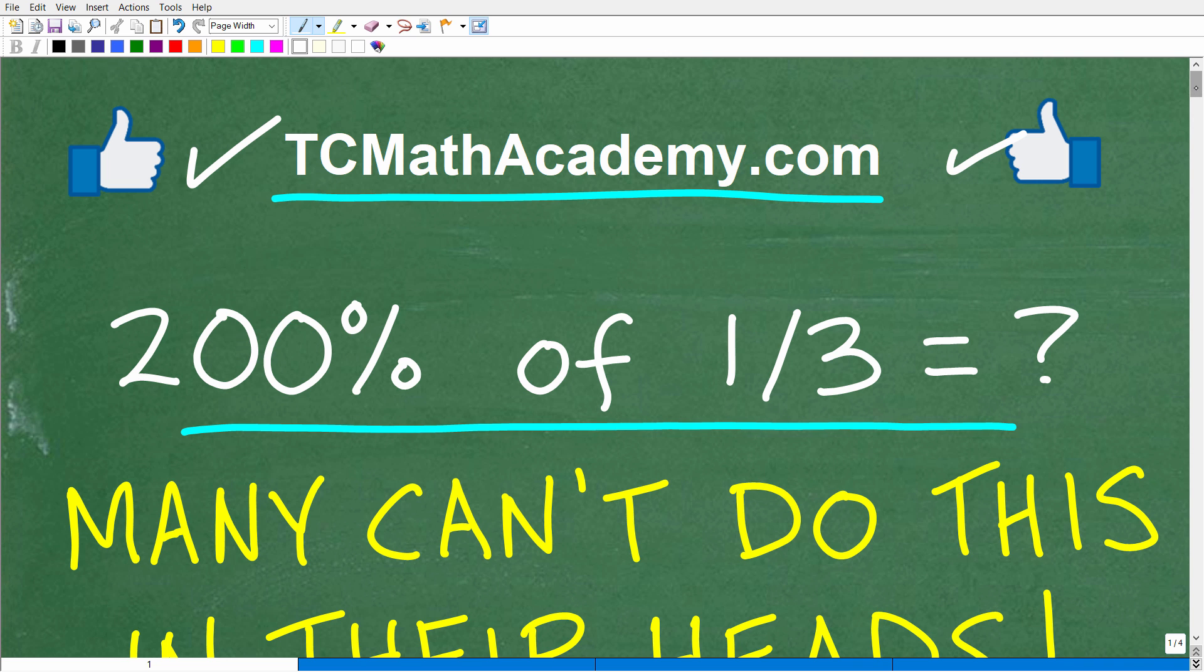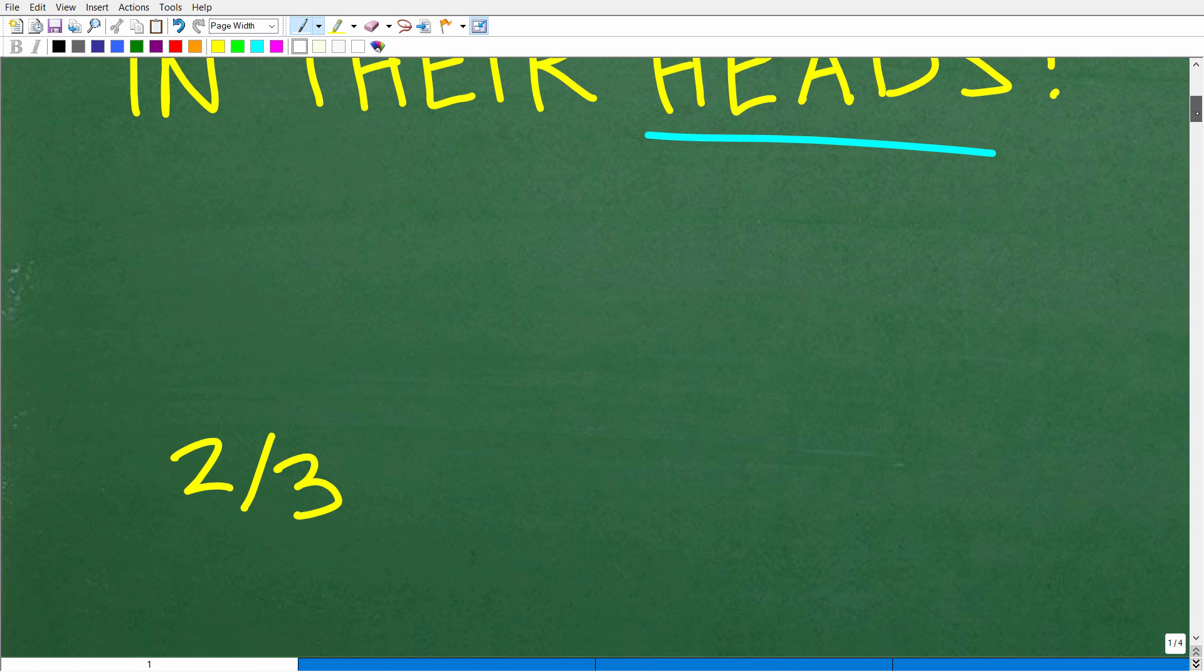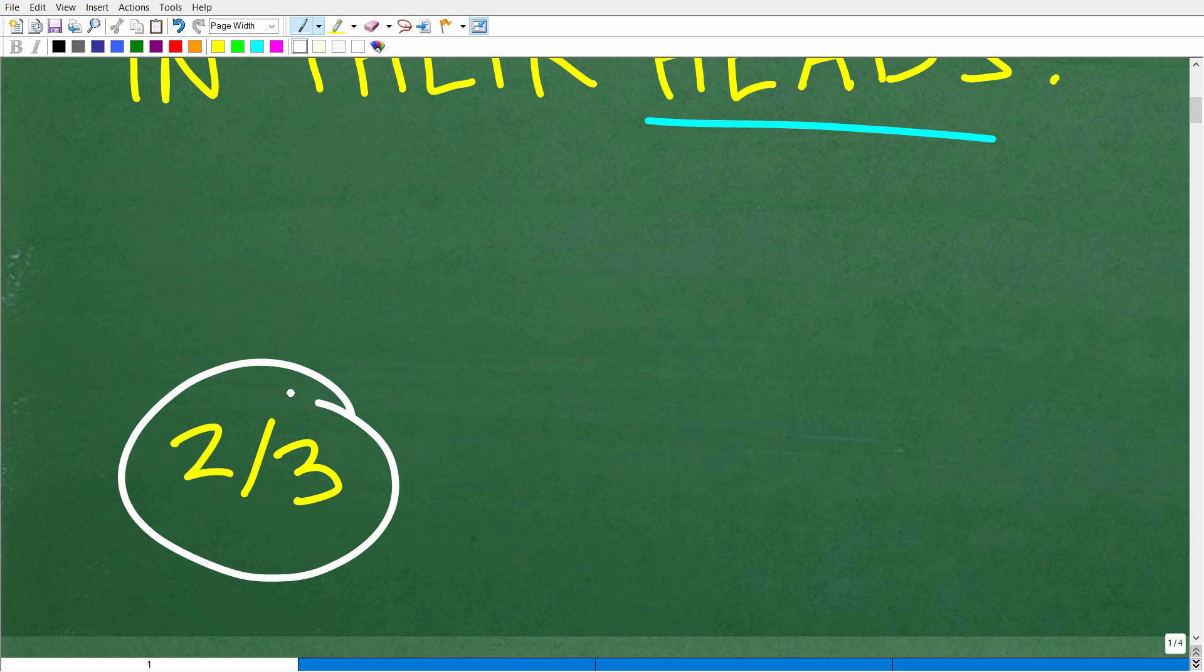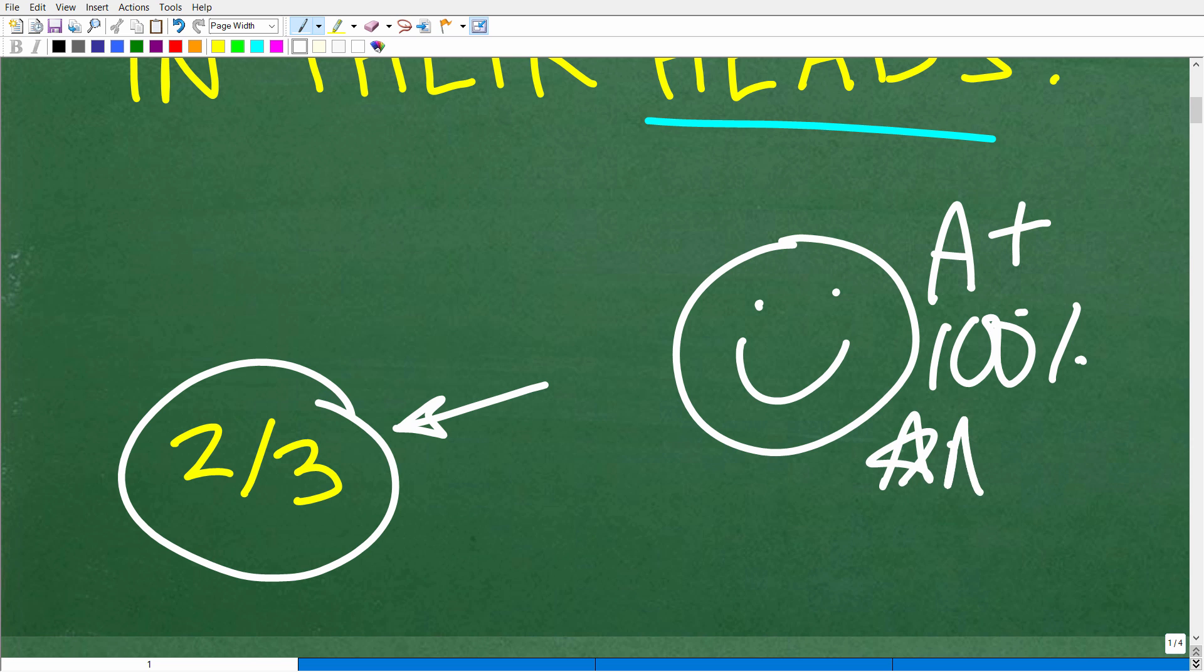Okay, so 200% of one-third, what is the correct answer? Well, the correct answer is two-thirds. Okay, so how did you do? Well, if you got this right, let's celebrate by giving you a nice little happy face and A+, a 100%, and multiple stars.